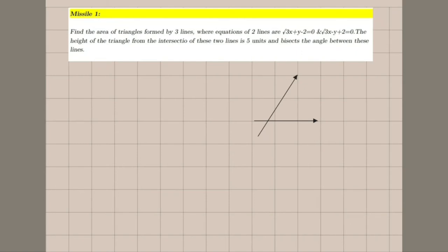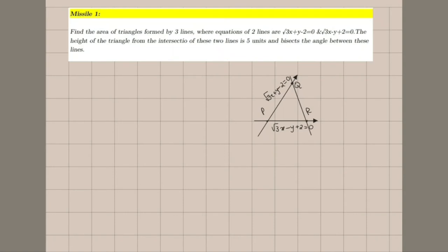The height also bisects the angle between these two lines. Let's gather the info given in the question. These two are the line equations: √3x + y − 2 = 0 and √3x − y + 2 = 0. The third side forms a triangle with vertices P, Q, R. One way is to find Q and R and use the area formula, or since we know the height, we can use: area = ½ × base × height.